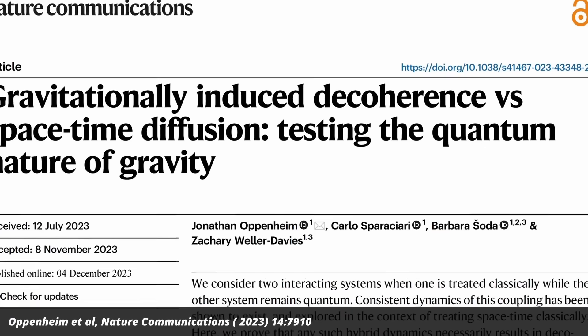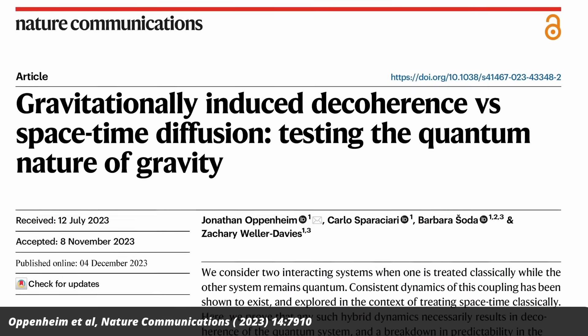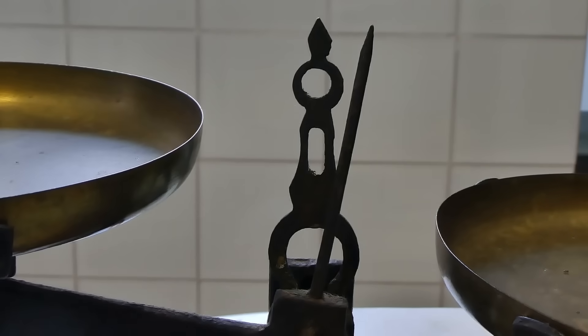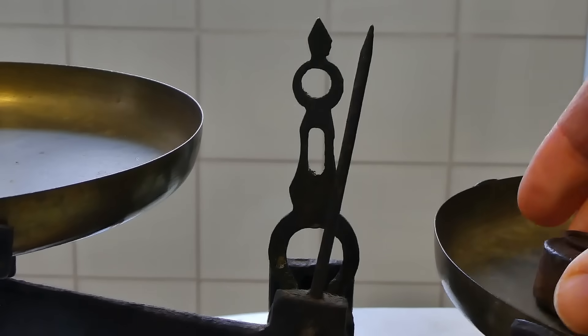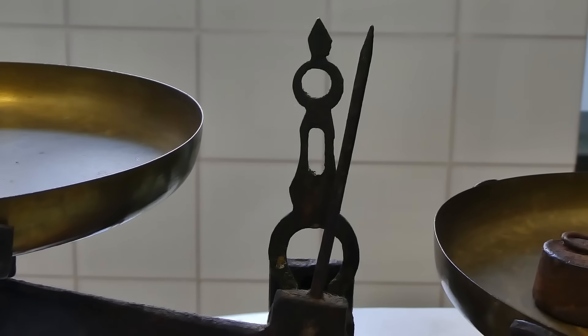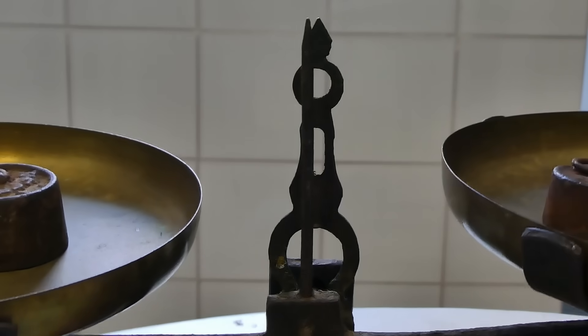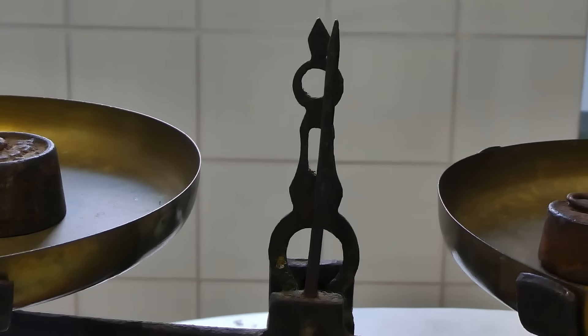In a second paper, Oppenheim, together with several colleagues, works out a way to test the idea. They say the best way to test it would be to very precisely track the mass of some weights, because that should slightly fluctuate. This test might become possible in tabletop experiments in the near future.